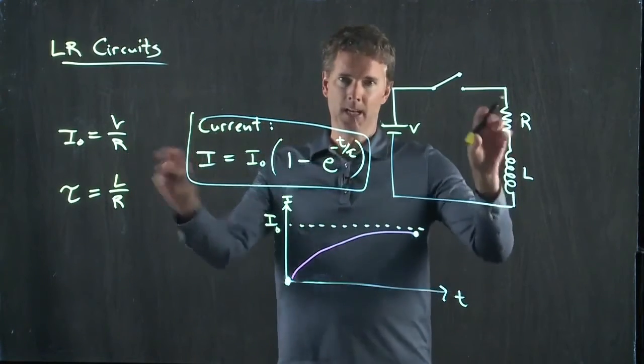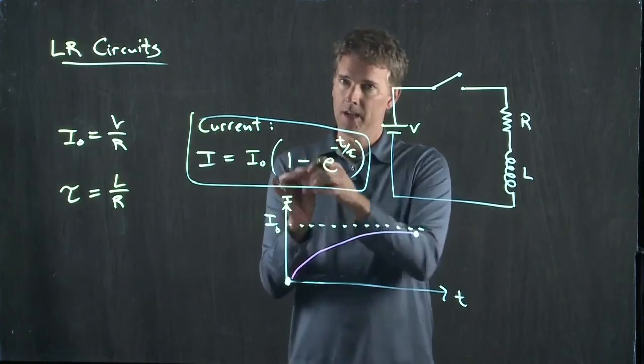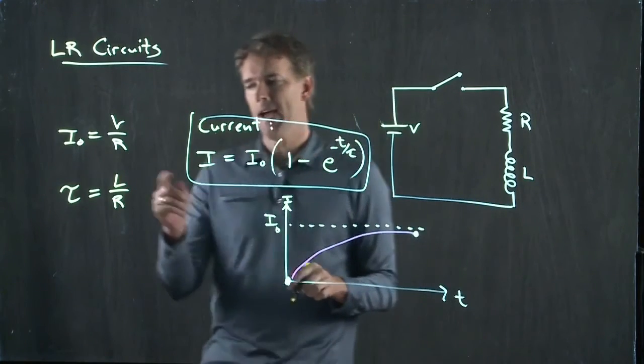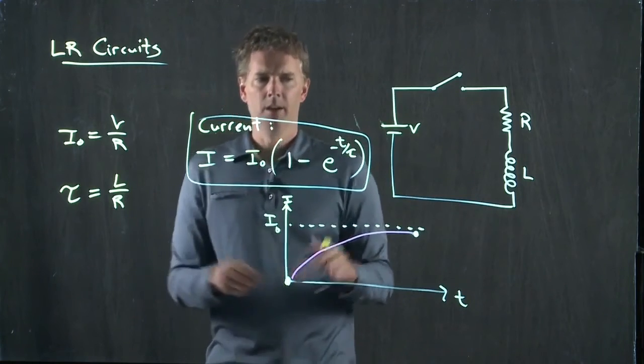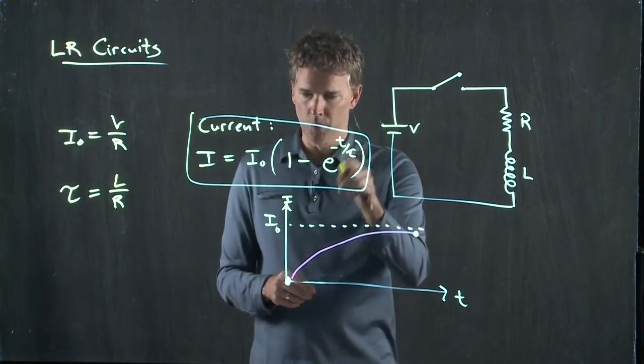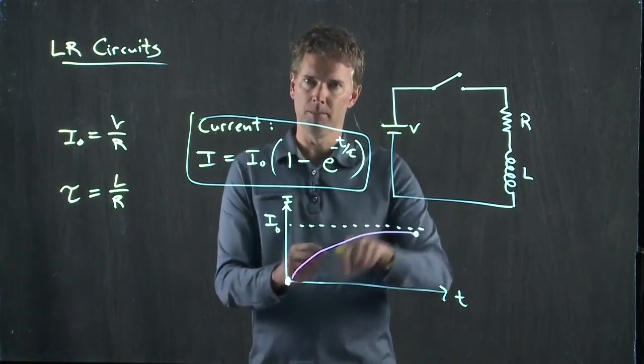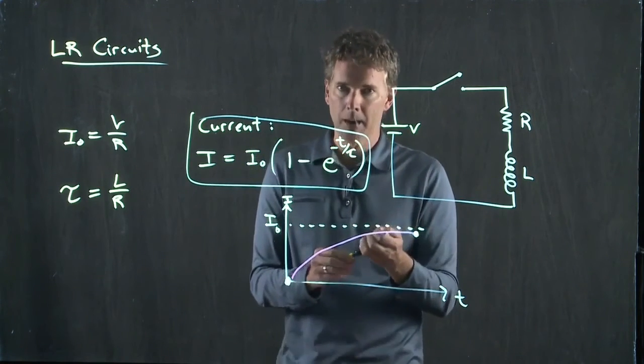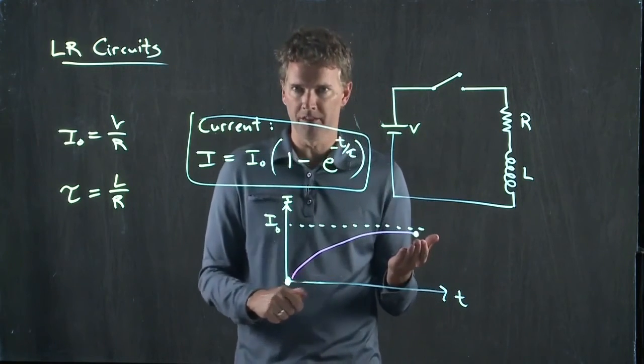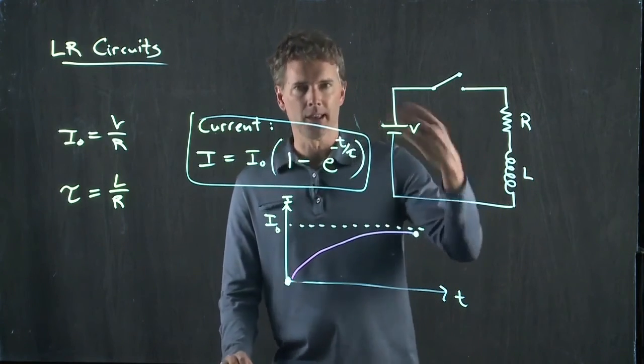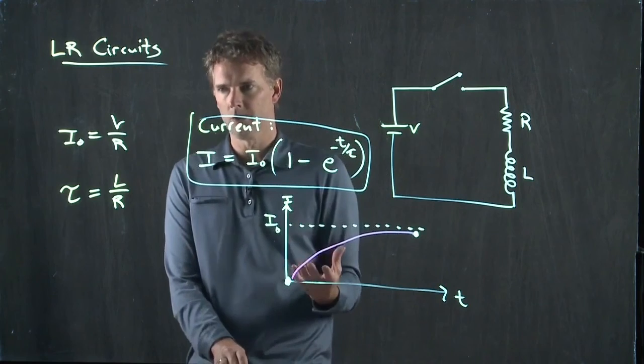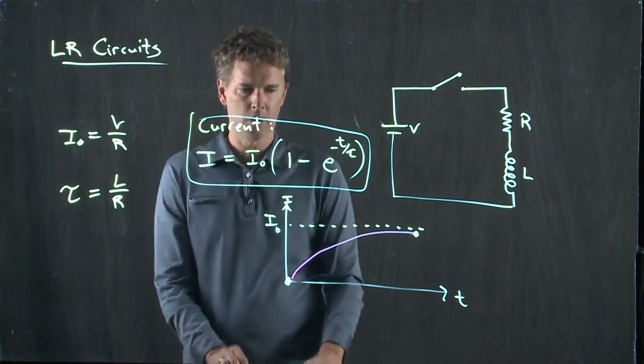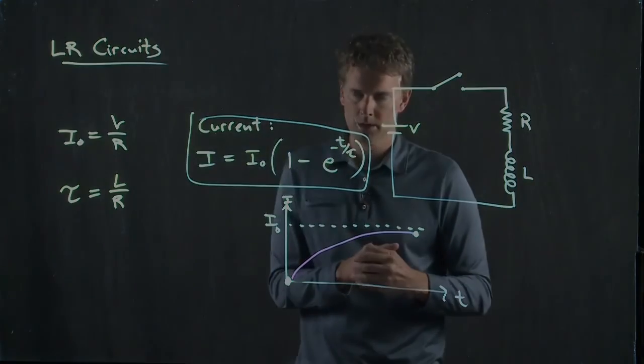If I have a very big inductor, that time constant gets very long. This thing stretches out quite a bit. If I have a very big resistor, the time constant gets short and it quickly goes up to the maximum value. Okay? And that's because ultimately not much current is going to flow in the system. And so the inductor is less concerned about the changing current. All right? So this is the equation for the current in an LR circuit like we showed here.